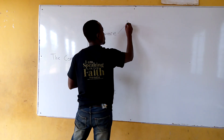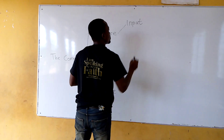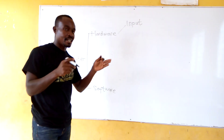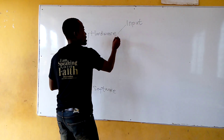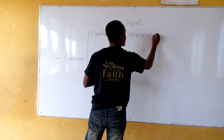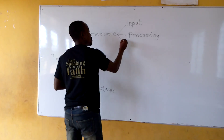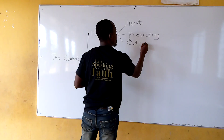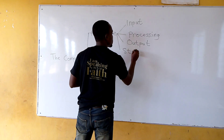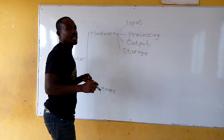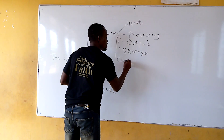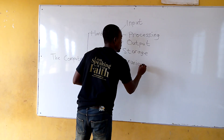First of all, we have input hardware — what is used to put data into the computer. And then we have processing hardware. And then we have output hardware. And then we have storage hardware. And in some jurisdictions, they even add a final one, which is communication hardware.